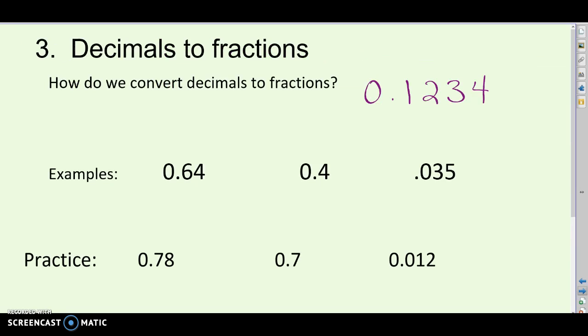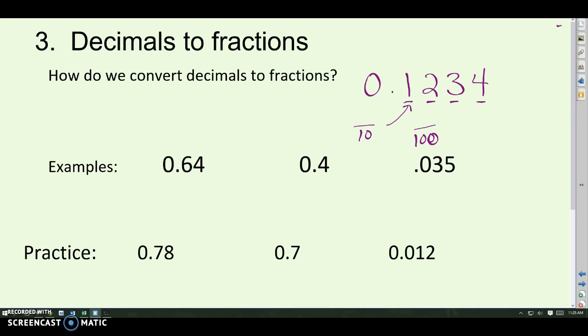On to changing decimals into fractions. So we talked about this a little bit, how these place values all have a name, and that's going to help us. So let's go through them. If you want to write down this example, point zero, one, two, three, four. This is the tenths place, so that means out of tens. The two is in the hundredths place, out of 100. The three here is in the thousandths place, and the four is in the ten thousandths place. So if you remember those different place values, tens, hundredths, thousandths, ten thousandths, we'll be able to convert.